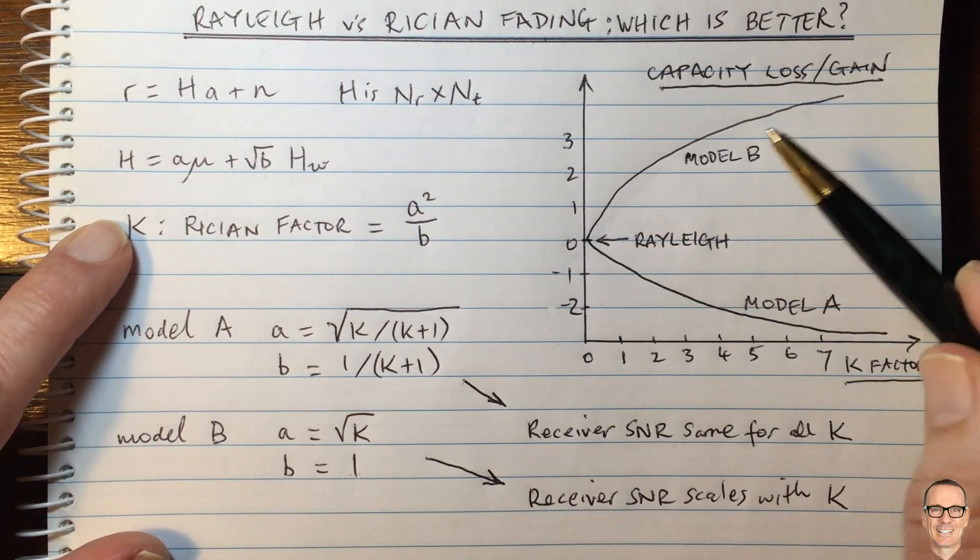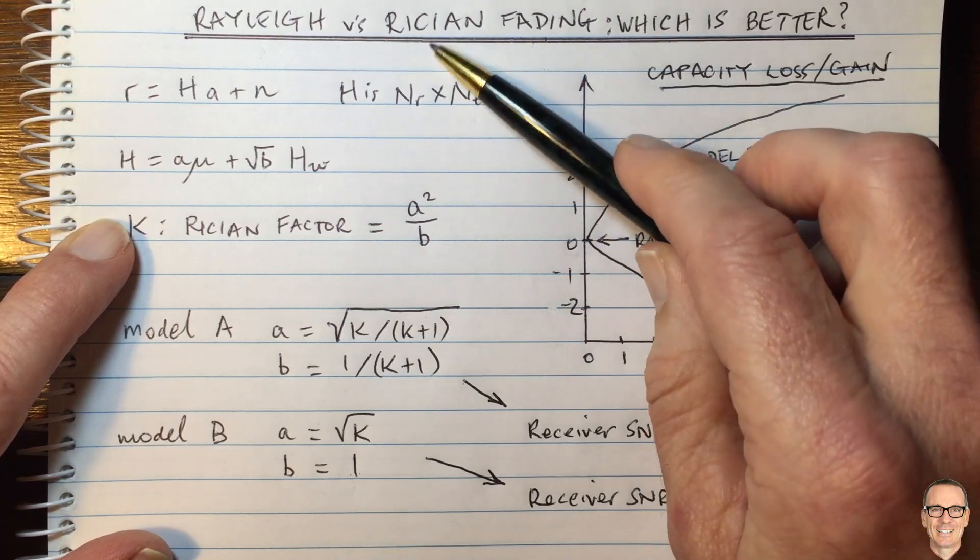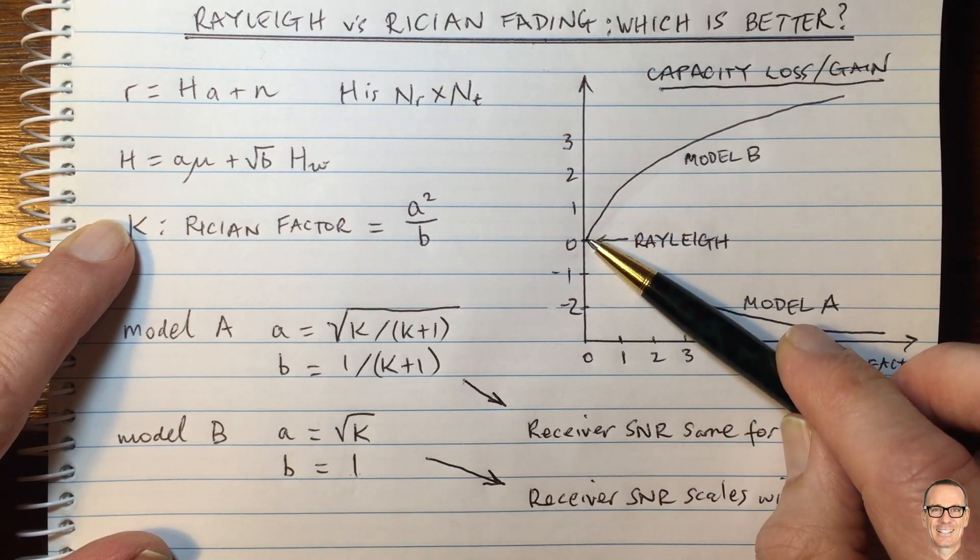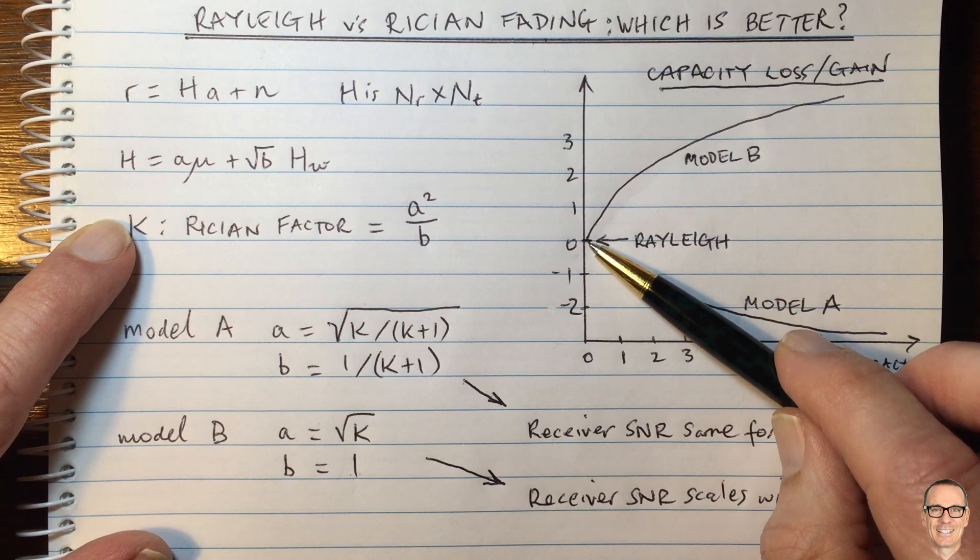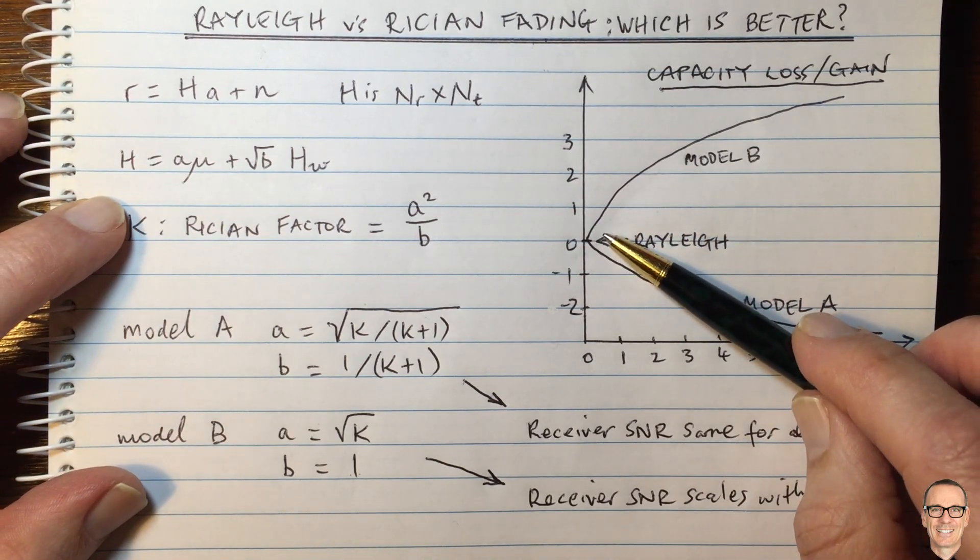In practice, the Ricean, if you can have an increase in your dominant path, if you can get more line of sight, then in general, in practice, you would be doing that in addition to whatever reflective paths are around.